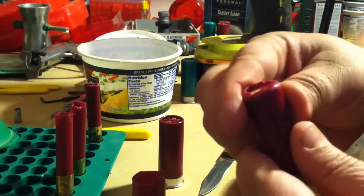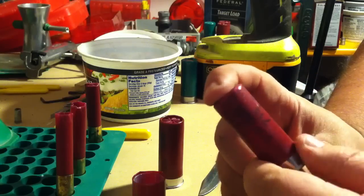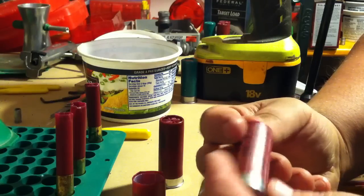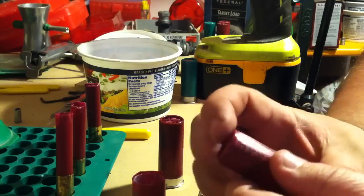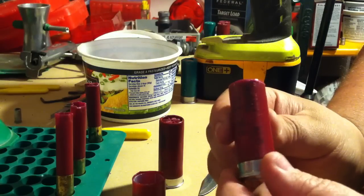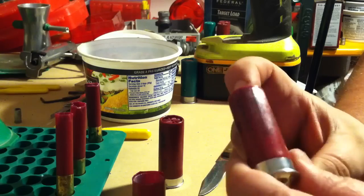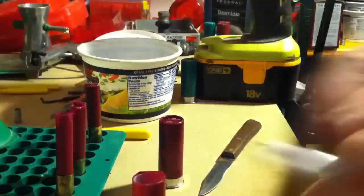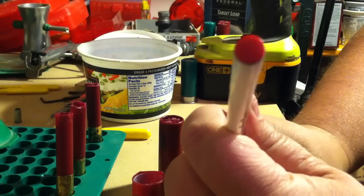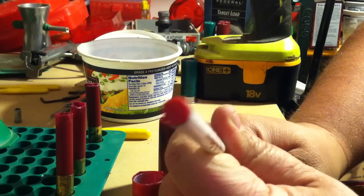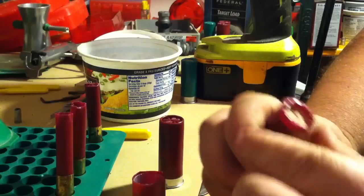Matter of fact, they probably feed better than a regular two and three quarter shell because they're just a little bit more rounded. They're even just a fuzz shorter, but that doesn't seem to affect the cycling in either of my pump action guns. I've got a Smith and Wesson and a Winchester. Then I'll just label this overshot card with an S so I'll know it's a slug.